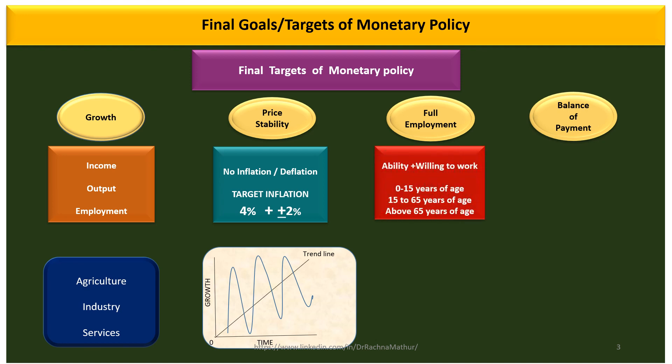Next is full employment. There are four factors of production — land, labor, capital, and enterprise — that should be fully employed. The country's population is divided into three age groups: 0 to 15 years, 15 to 65 years, and above 65 years. Those between 15 to 65 are the working population, and those with the ability and willingness to work must get employment.